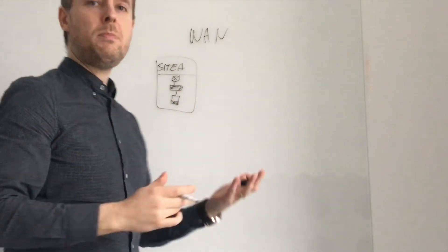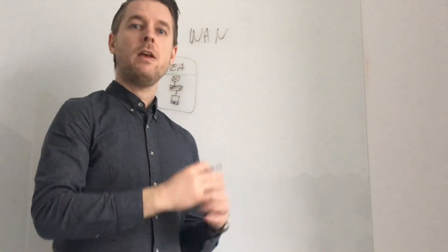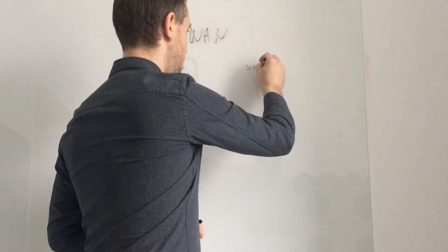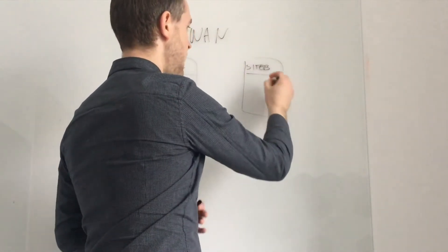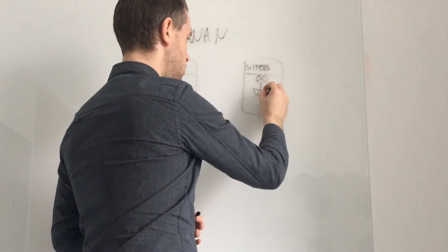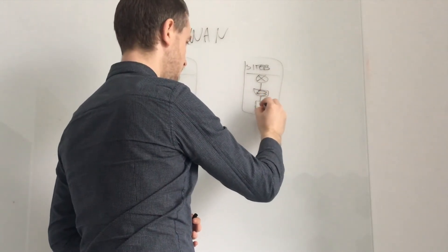So site A, which could be a particular office in a workplace for example, now connecting to a separate office which we will call site B. So site B likewise will have a router, a switch, and some devices hooked up to that.